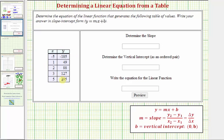In this problem, we're given a table of values that was generated from a linear function. We're asked to determine the slope, the vertical intercept, as well as the equation of the linear function in the form y equals mx plus b.